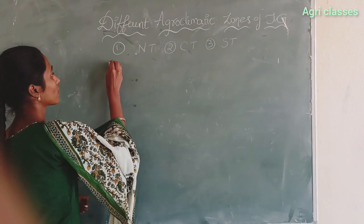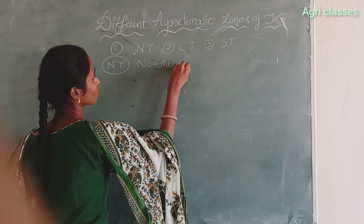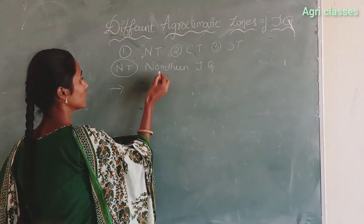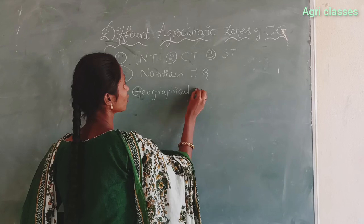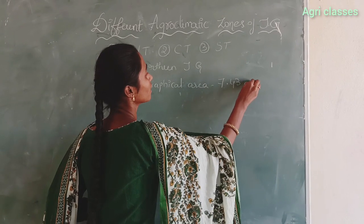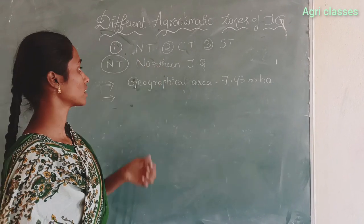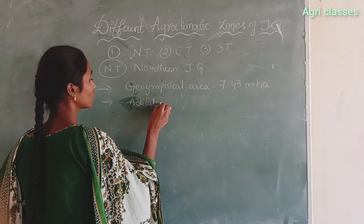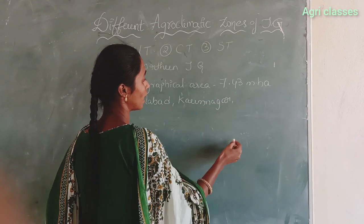So first we will describe the Northern Telangana zone. The geographical area of the Northern Telangana zone is 7.43 million hectares. The districts concerned in the Northern Telangana zone are Malaki, Adilabad, Harunaga, and Nizamabad.